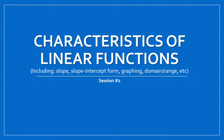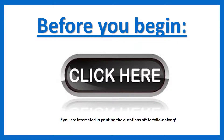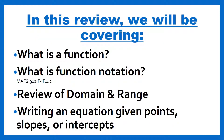Hi, this is session two for our EOC preparation. This is on characteristics of linear functions, and this will include slope, slope-intercept form, graphing, domain and range, and a couple of other items. Before we begin, if you would like to follow along, go ahead and click that button right here that says 'click here' and it will pull up a PDF file that you can print from your computer. Remember, when you do that it will pause the screen, so you'll need to come back to the video when you're done and click play.